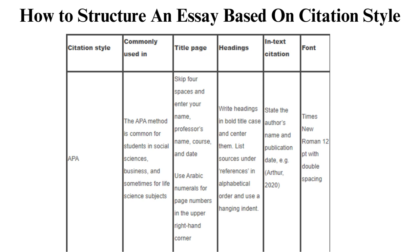APA — Title page: skip four spaces and enter your name, professor's name, course, and date. Use Arabic numerals for page numbers in the upper right-hand corner. Write headings in bold title case and center them. List sources under References in alphabetical order and use a hanging indent. In-text citation: state the author's name and publication date, e.g., Arthur, 2020. Font: Times New Roman 12 points with double spacing.